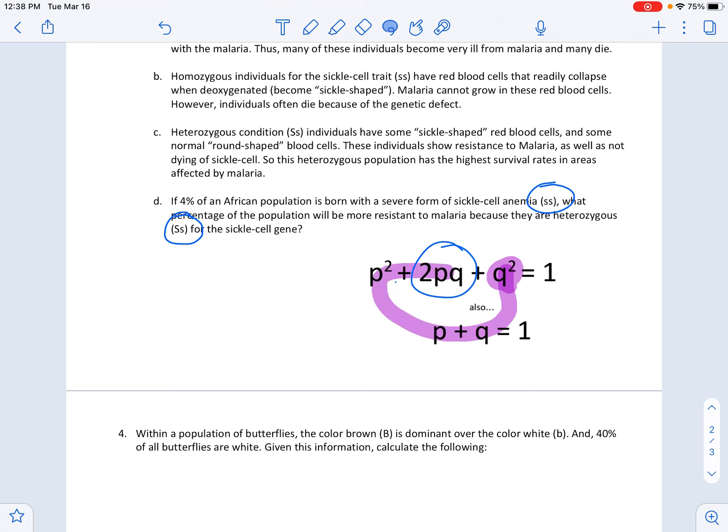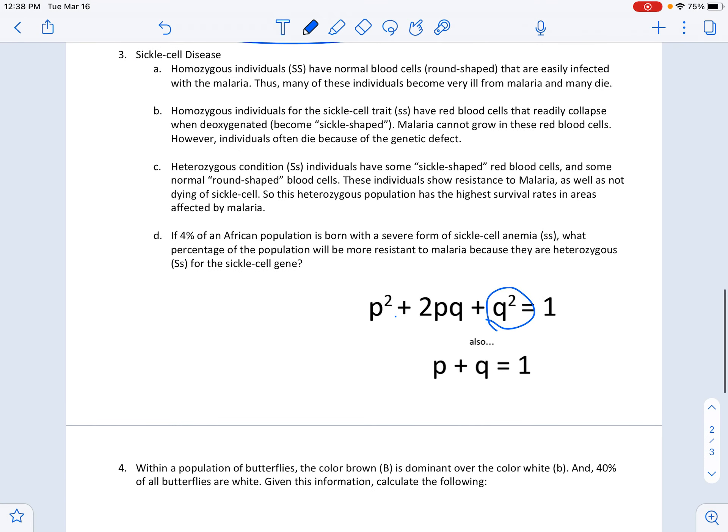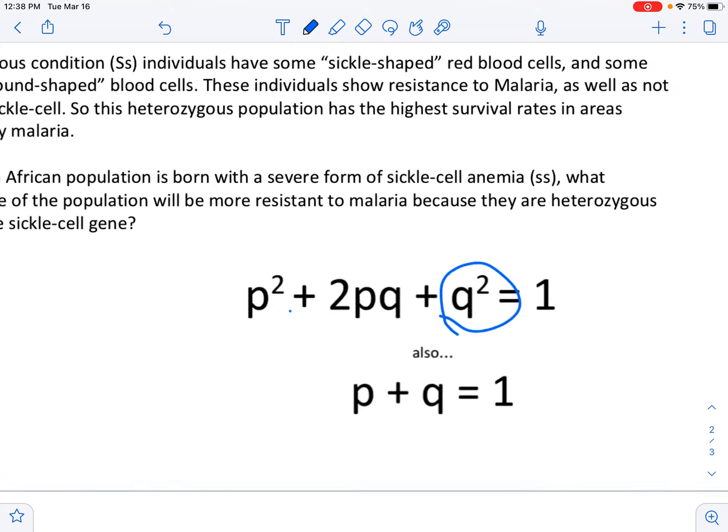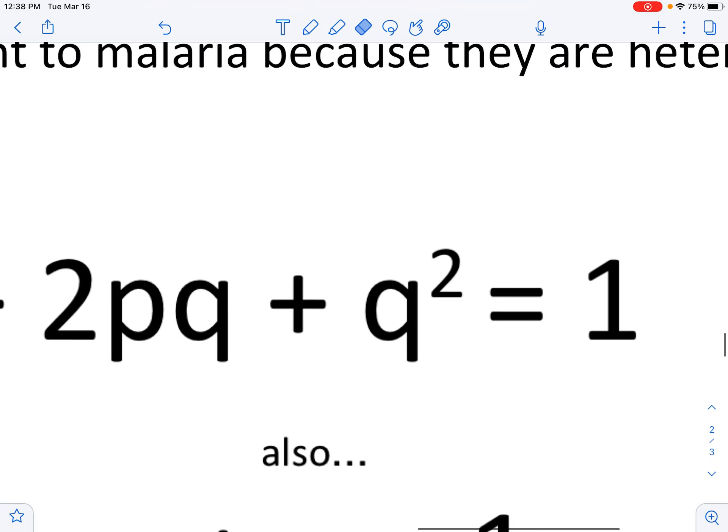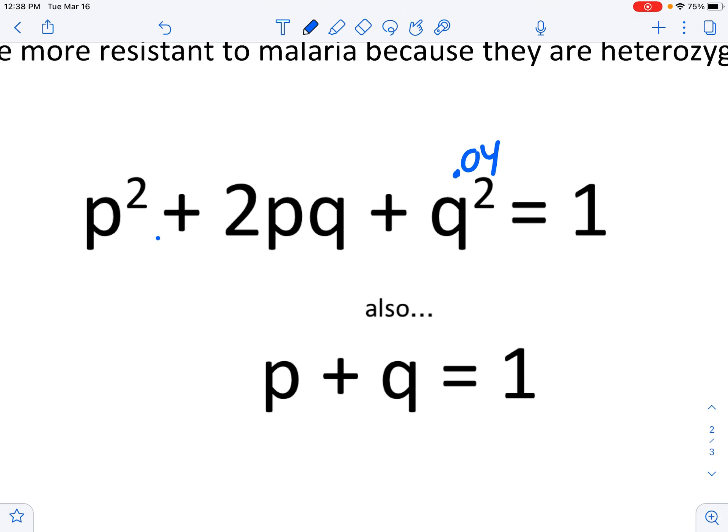So we kind of have to, even though the chart isn't shown, we kind of have to go through all that stuff. So we're going to start with q² here, probably. So 4% of an African population is born with the severe form. We're given q², so q² is 0.04. I guess I can write that right here, 0.04. That would mean q - what's the square root of 0.04? It's 0.2.